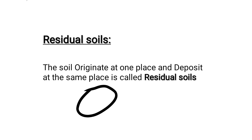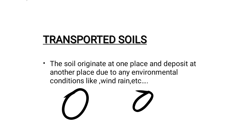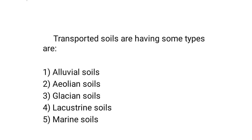So residual soils are originated and deposited at the same place. Next is transported soil — the soil that forms at one place and is transported by environmental conditions like wind or rain and deposited somewhere else. That is transported soil. Transported soils have several types: alluvial soils, aeolian soils, glacial soils, and marine soils.